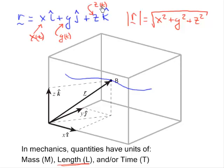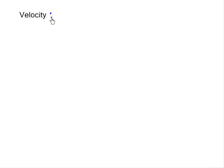Y is also a function of time, and so is z. These are all functions of time, which leads us to say that this vector r is a function of time. This leads us to the next quantity of interest in mechanics: velocity. When I mention velocity, I'm going to start off with a definition. Velocity is a vector, and by definition it is the time derivative of the position vector.